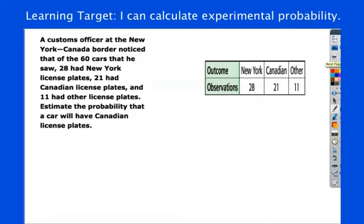I'm going to go ahead and have you pause the video here and try this one. In this one, we're estimating the probability, there's that estimate, meaning experimental, that a car will have Canadian license plates. Go ahead and pause the video, make sure you get the notation correct. And then, when you're ready, push play for the solution.